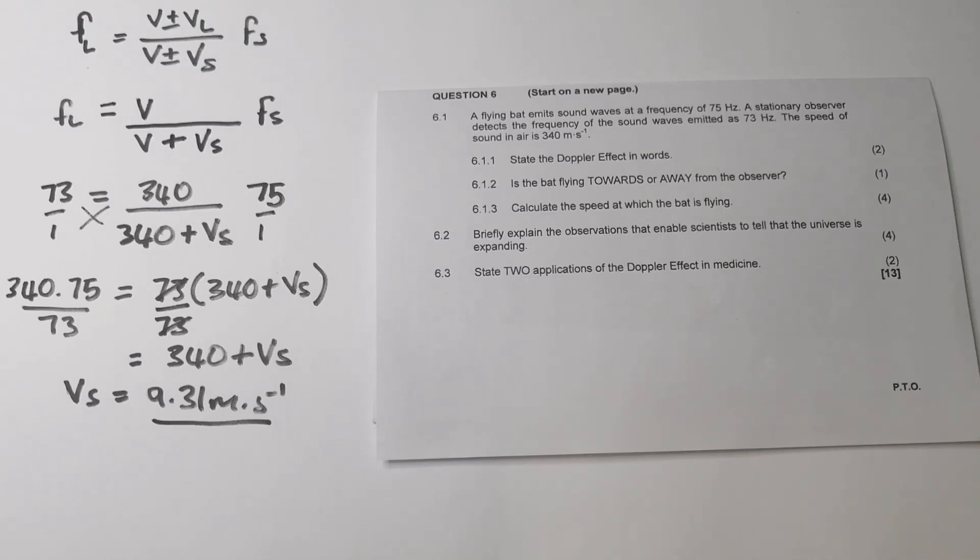And the last one, they say state two applications of the Doppler effect in medicine. Please remember that it's used to detect the flow of blood through the veins. And then also, they use it for ultrasound to just detect the health of a baby inside a mother's womb. So those are the two most prominent uses of it. And I think I want to leave it there. I hope that this will be very helpful to you.